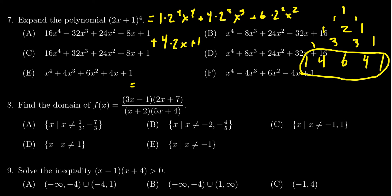So simplifying these, 2 to the 4th is 16, so you get 16x to the 4th. 2 cubed is 8, times 4 gives you 32, so 32x cubed.